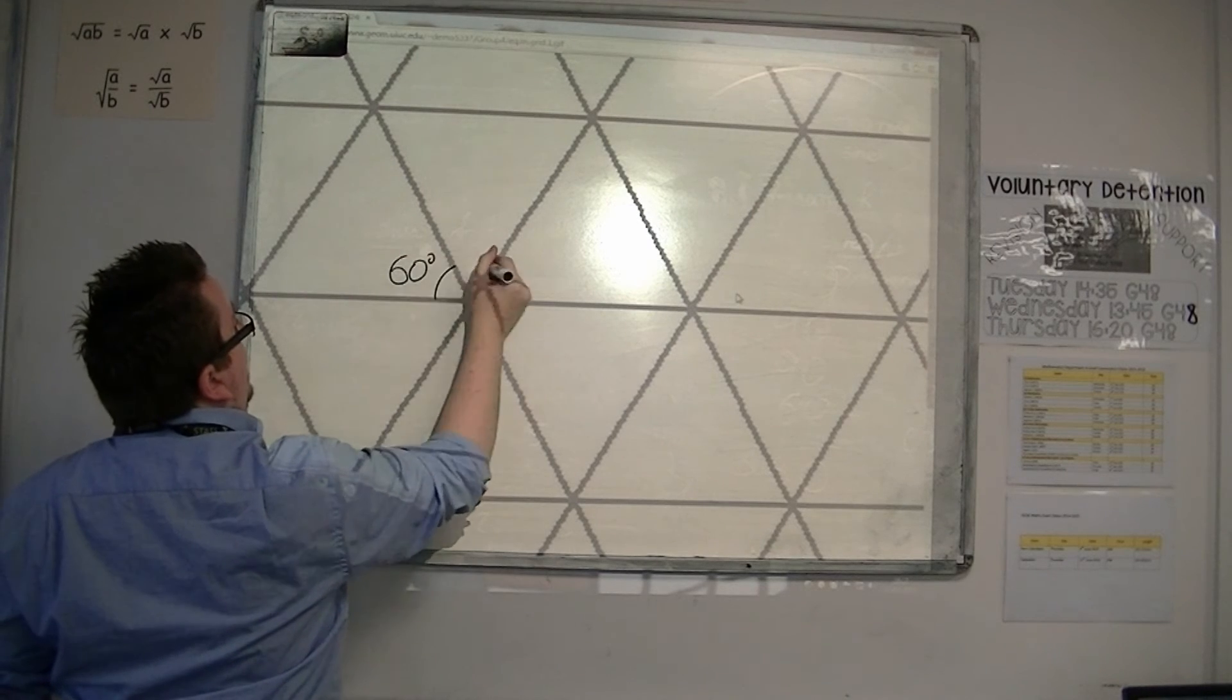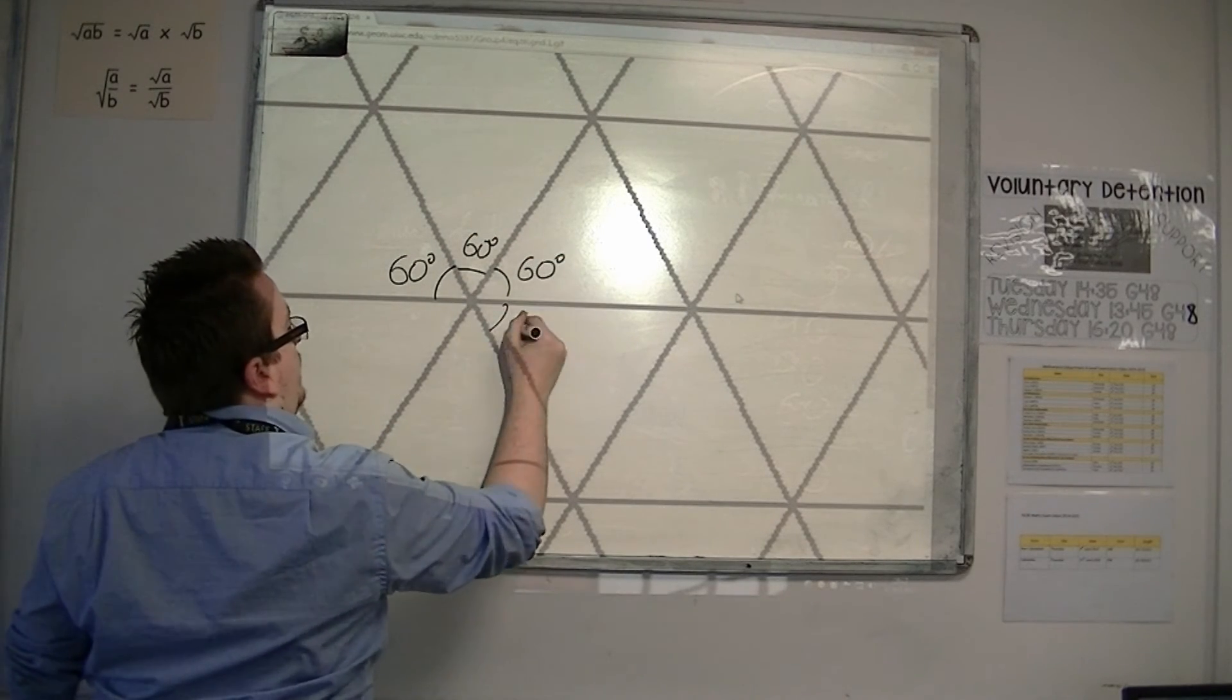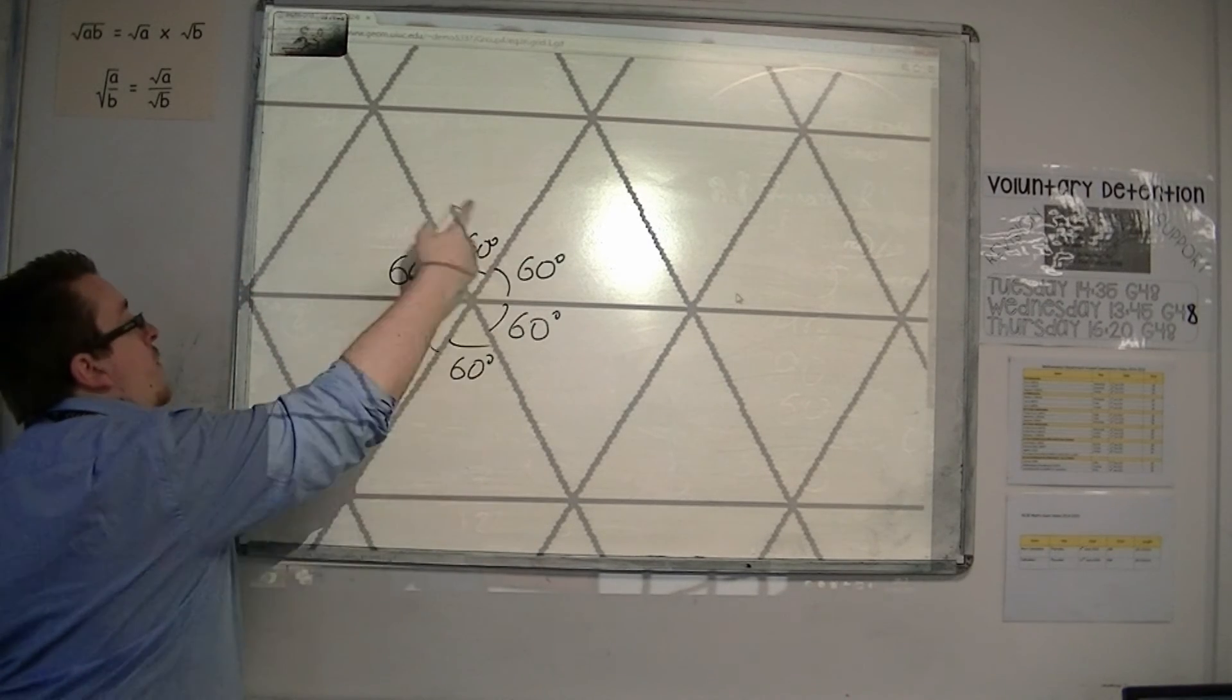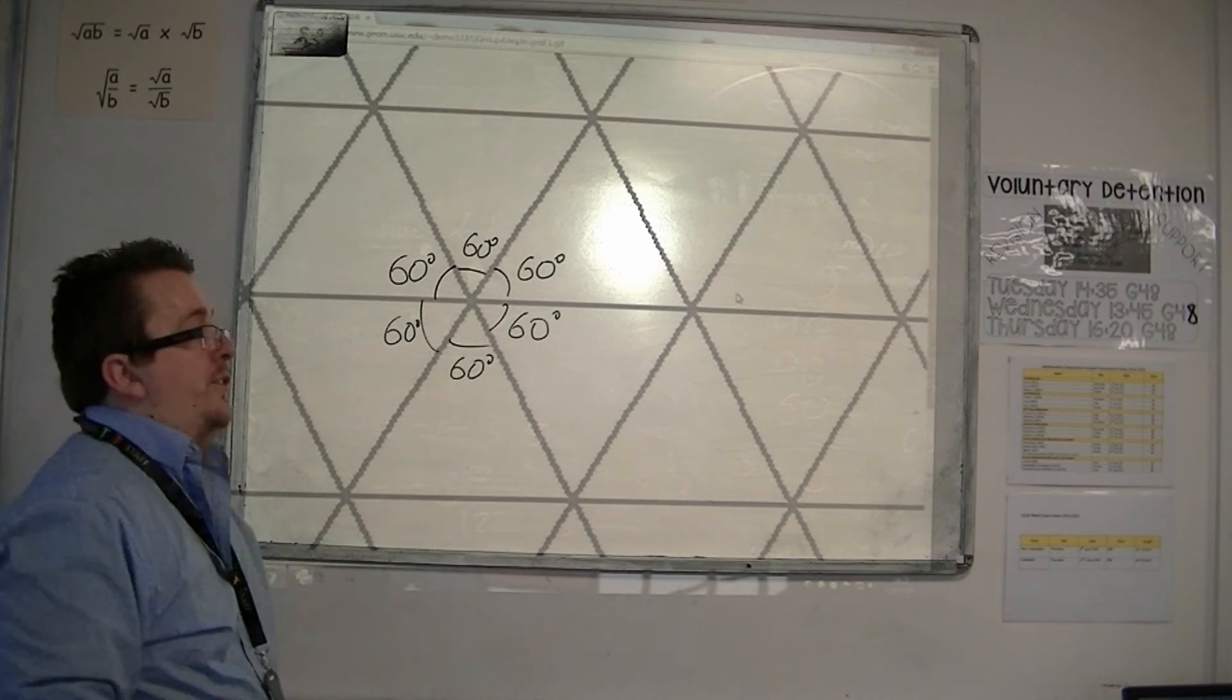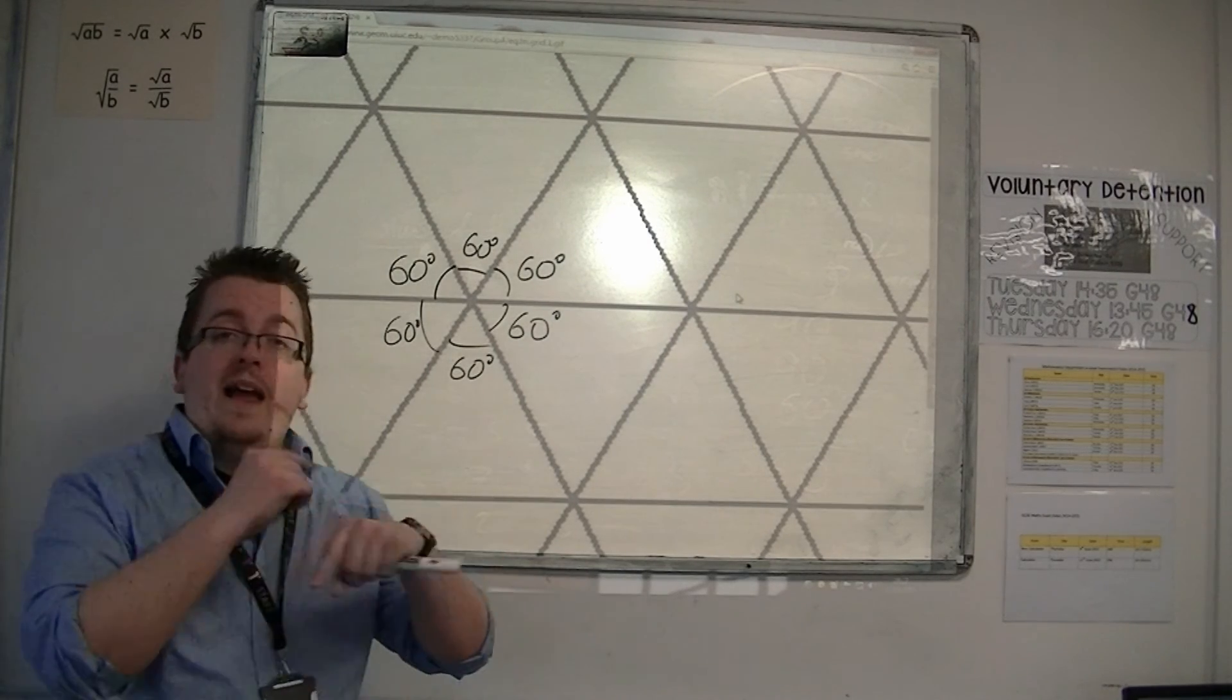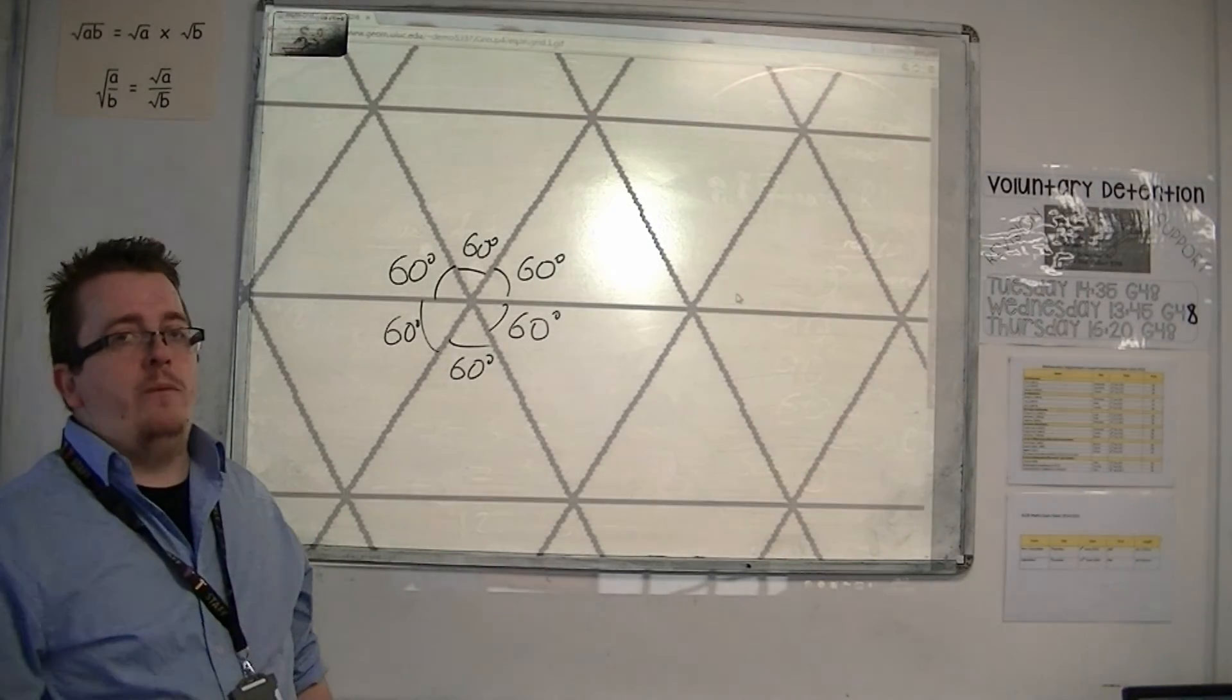I would have 60 degrees, 60 degrees, 60, 60, 60, 60, and six 60s add up to 360 degrees. So as long as the shapes' interior angles add up to 360, then I know those shapes will tessellate.